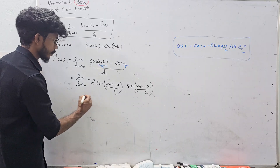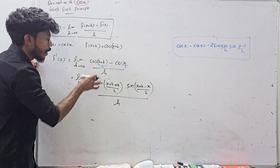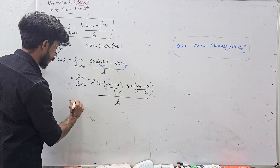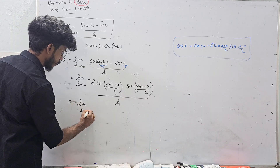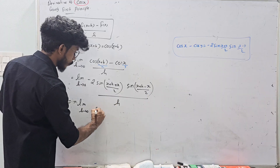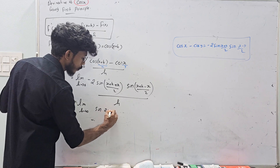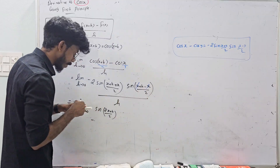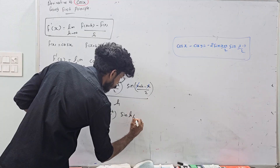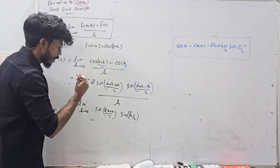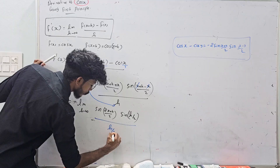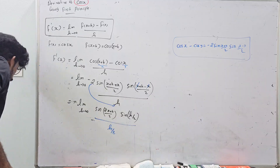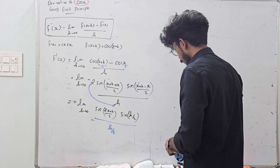Now x minus x will cancel, giving sin(h/2). The 2 will be in the denominator, and h/2 will be greater than h in the limit split. So f'(x) equals minus limit h tends to 0 of sin((2x+h)/2), into limit h tends to 0 of sin(h/2) divided by h/2.